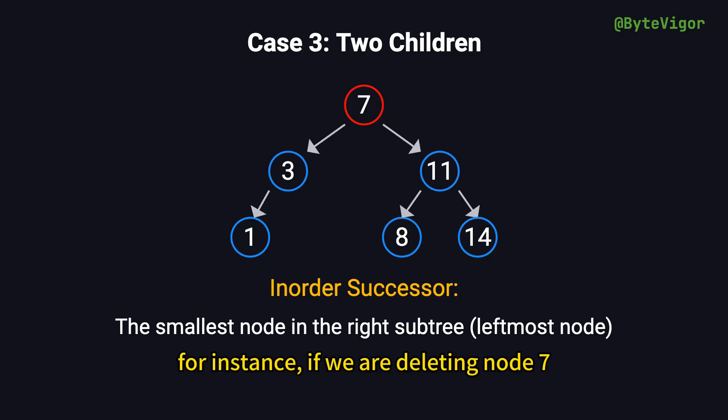For instance, if we are deleting node 7, its in-order successor is node 8. We replace the value of node 7 with the value of node 8, and then proceed to delete node 8. This approach effectively removes node 7 while preserving the binary search tree's structure and properties.